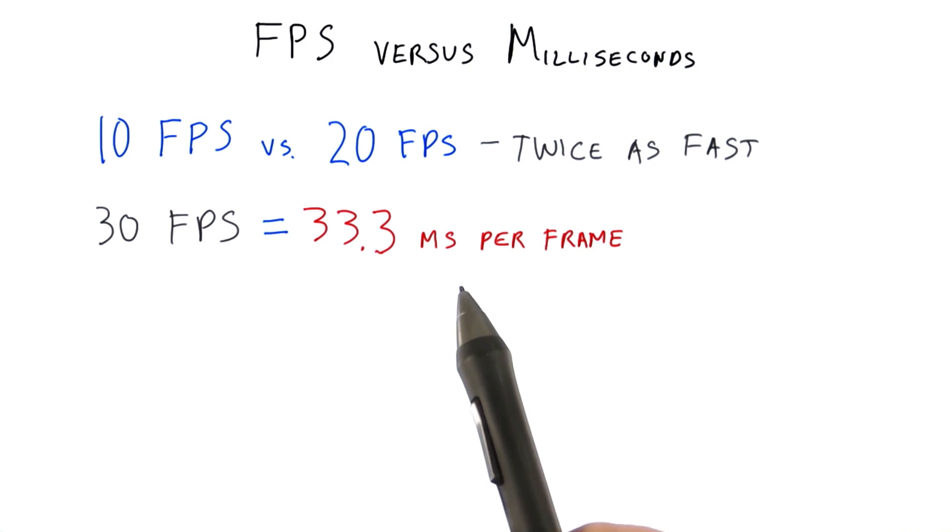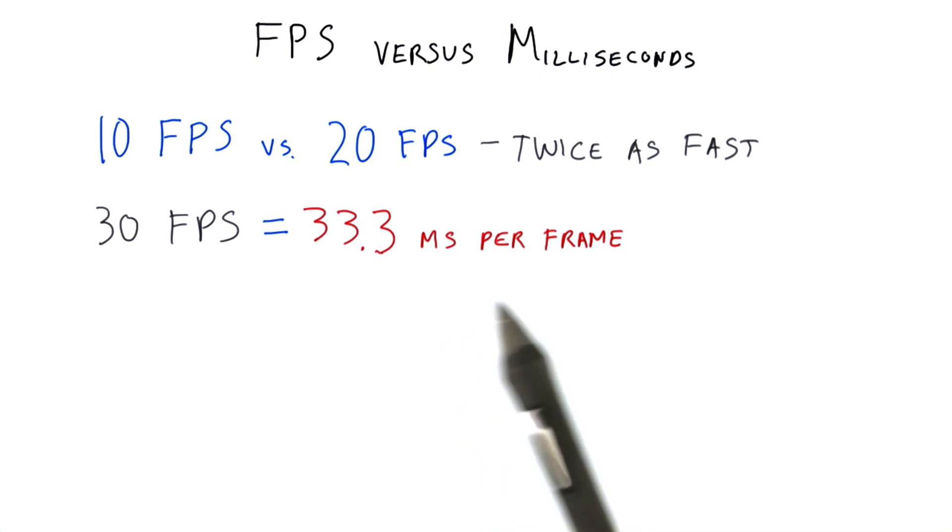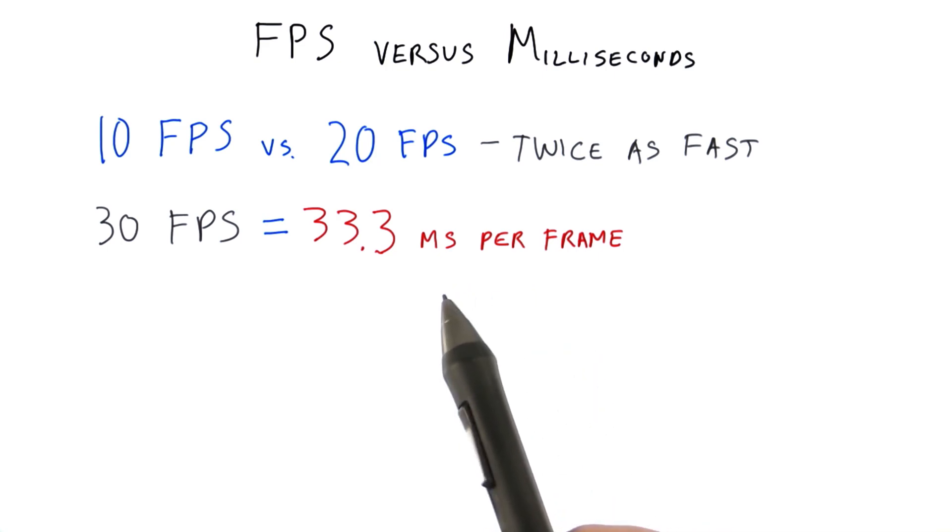This user interface is costing us 5 milliseconds per frame is a useful fact in its own right. This user interface slows us down by 10 frames per second is not all that helpful, since we don't know what the frame rate was before.